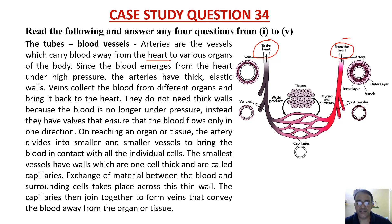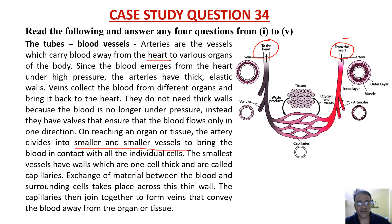On reaching an organ or tissue, the artery divides into smaller and smaller vessels to bring the blood in contact with all the individual cells. The smallest vessels have walls which are one cell thick and are called capillaries.